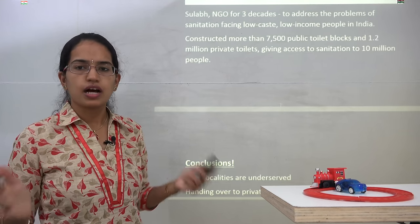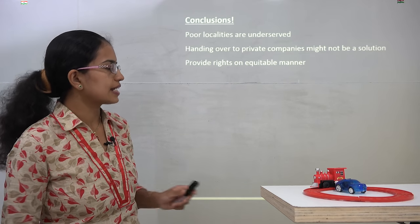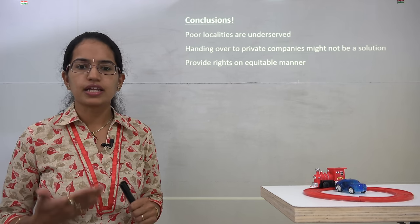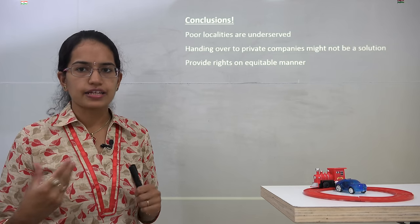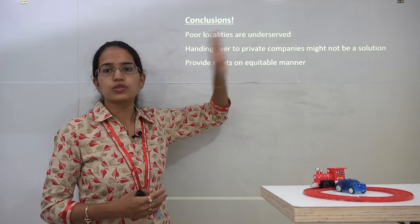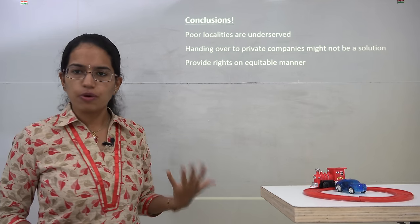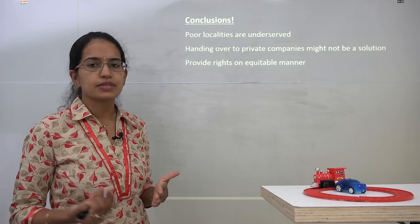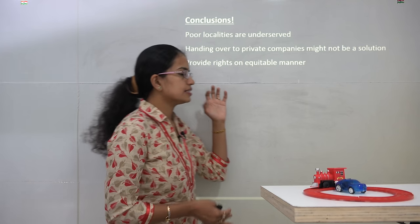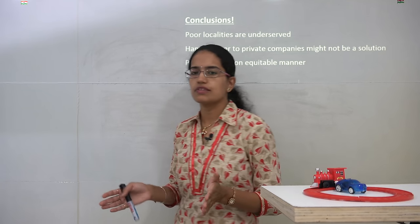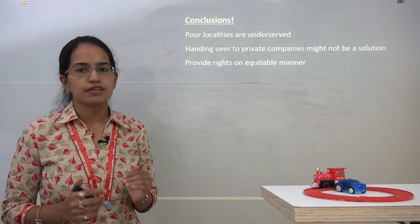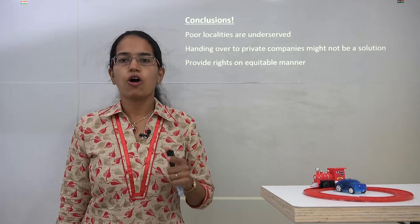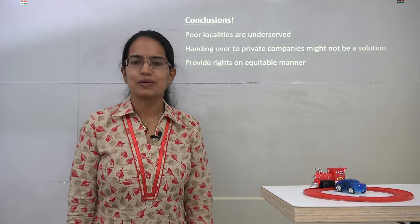In conclusion, poor localities are poorly served or underserved, and we need to bring development in those areas to improve water supply. Handing over responsibilities to private companies is not a definitive solution, as these companies are profit-driven and not focused on public welfare. The key theme is to provide rights in an equitable manner so that each and every person can avail the basic public facilities meant for them. With this we covered this chapter, and we will be covering the last chapter of Class 8 Political Science and continuing with Class 9 in upcoming lectures.